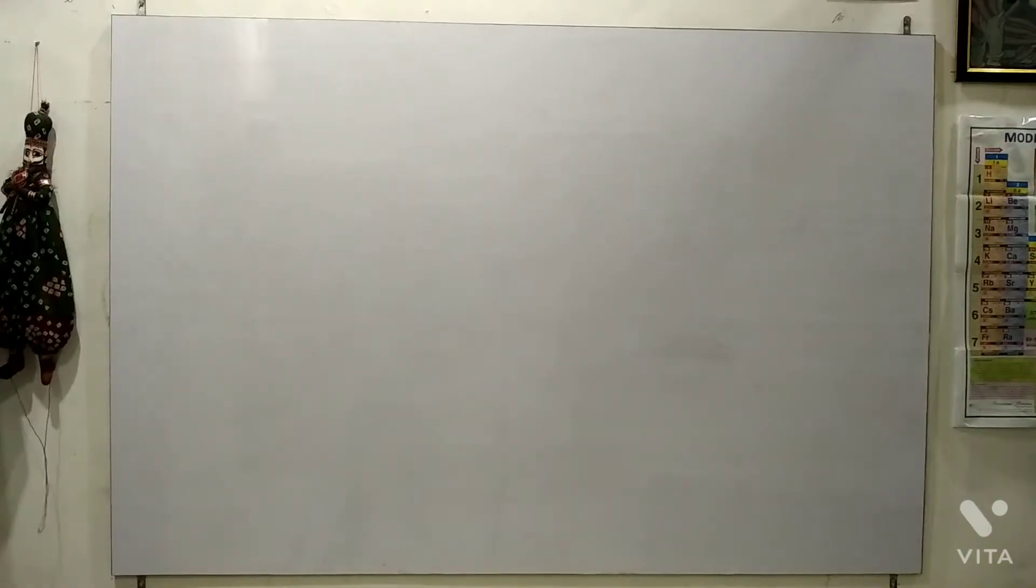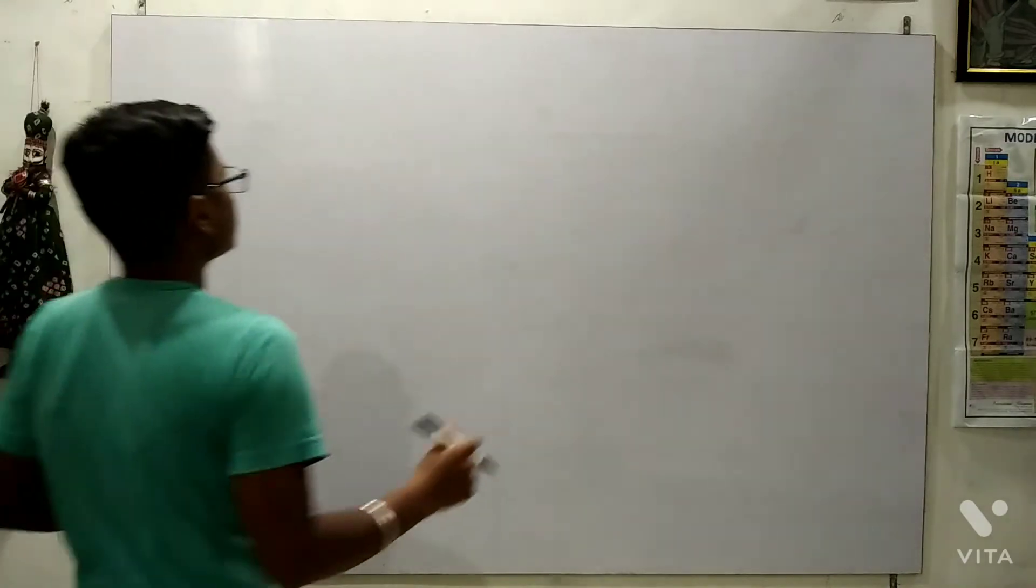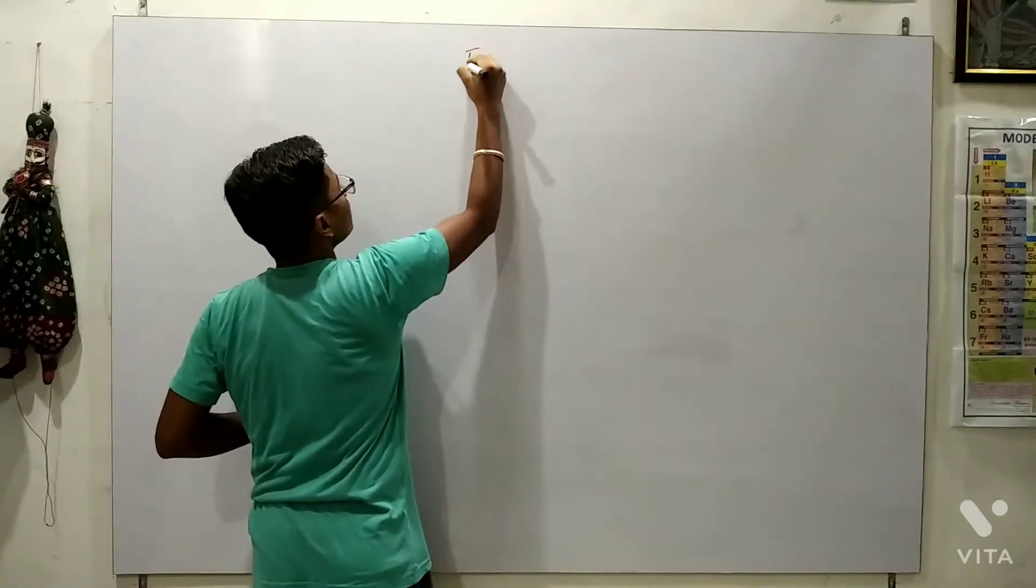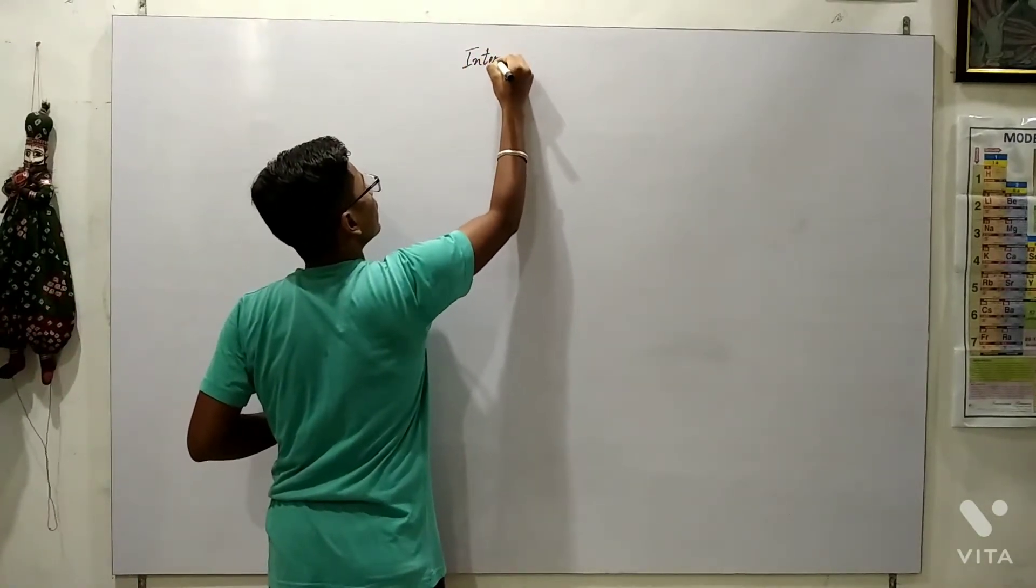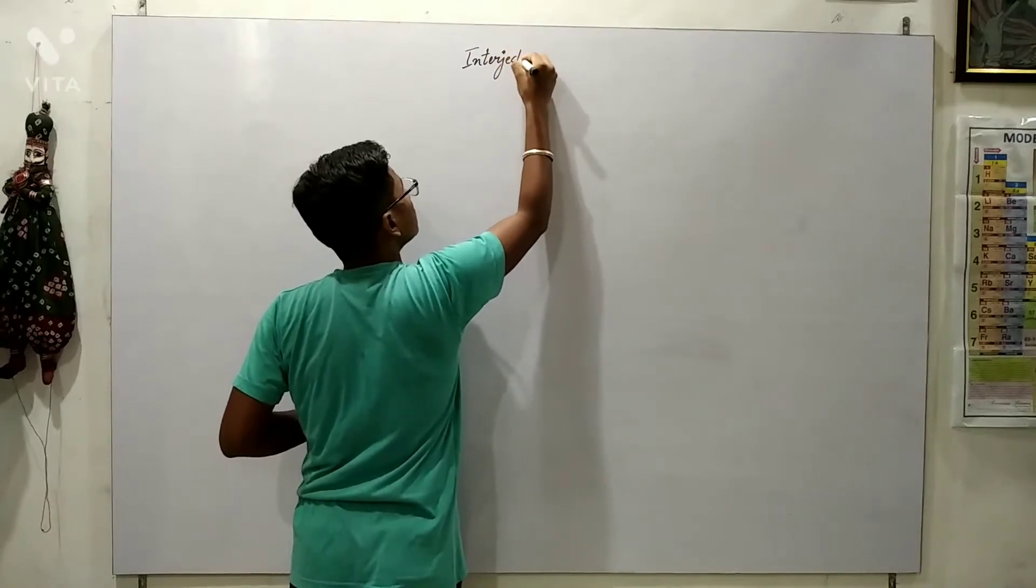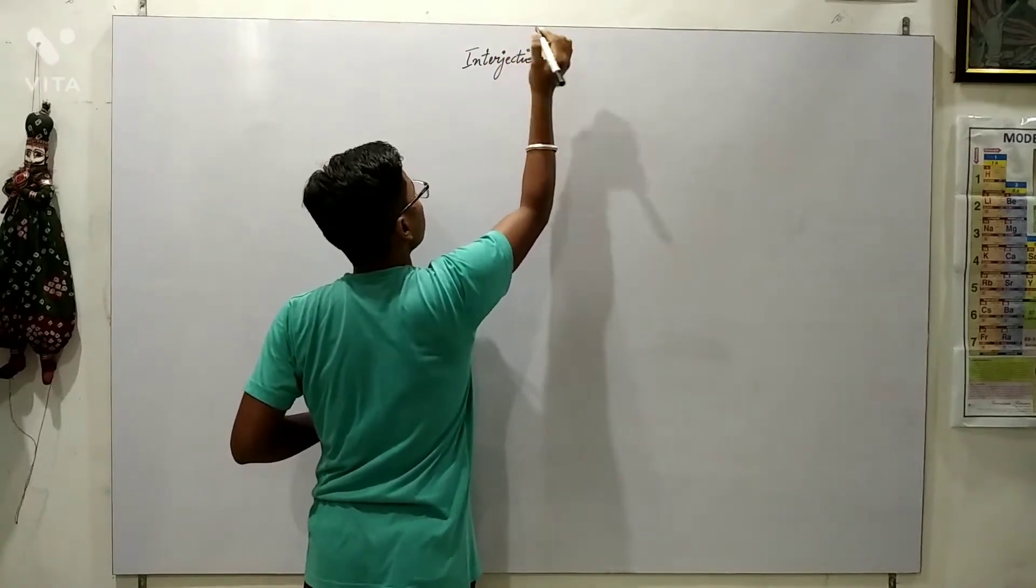Good evening everyone. So after conjunctions, our last part of speech is interjection. We are going to do that, and our parts of speech will be completed.